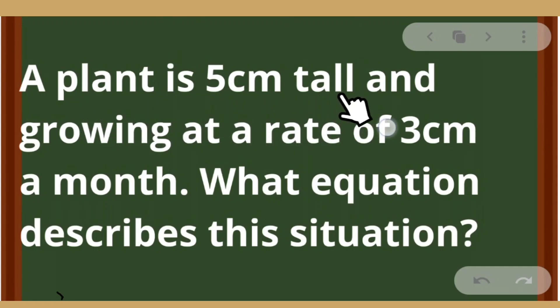A plant is 5 cm tall and growing at a rate of 3 cm a month. What equation describes this situation? To know the equation, we are going to represent some variables.